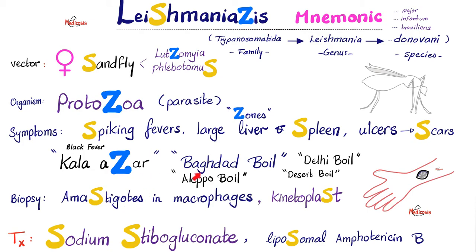This disease has acquired many names in different parts of the world. In India and Pakistan, it's Kala Azar, which literally means black fever. In Iraq, it's Baghdad boil. In Syria, it's Aleppo boil. In New Delhi, it's Delhi boil. In the desert, in the middle of nowhere, it's desert boil. All of this is referring to skin ulcer.